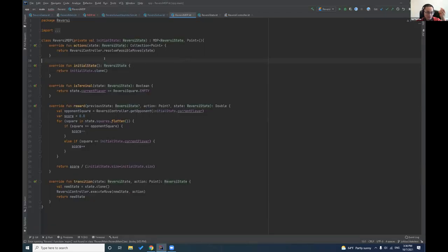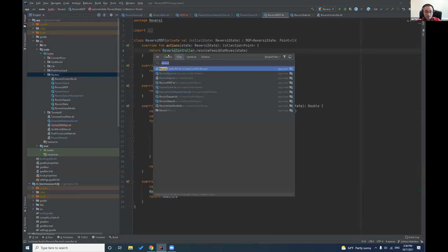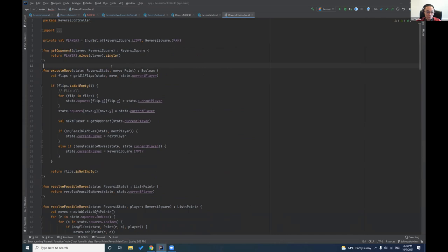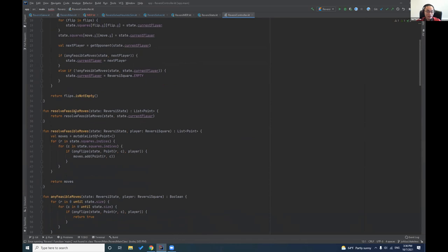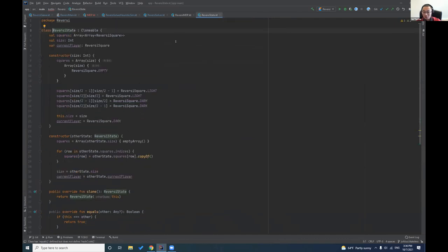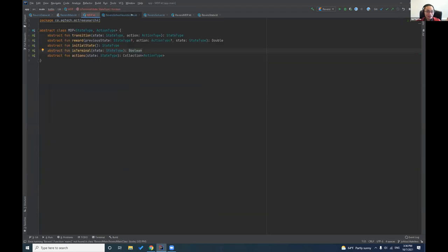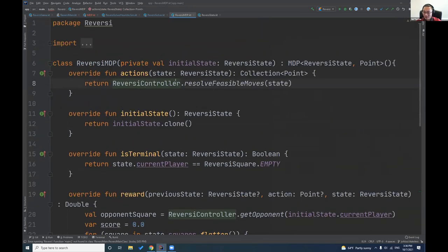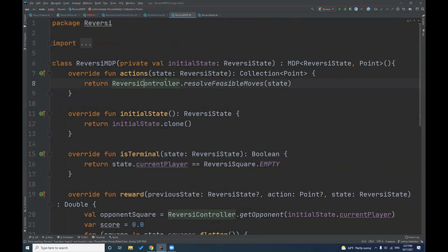In code, what does that look like? We can assume that Reversi controller allows you to execute a move, get feasible moves and things like that. This is something you write or use a library to represent your own scenario, but it hasn't used our library yet.